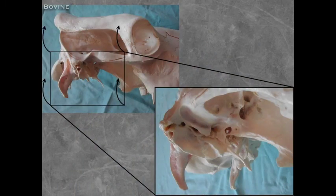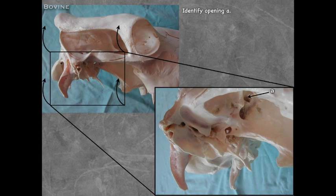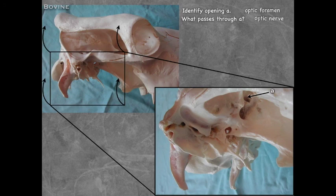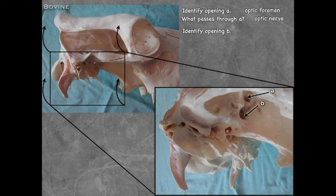Looking at the caudal aspect of the skull tilted to see the foramina: foramen A is the optic foramen, transmitting the optic nerve. The large foramen at B is a combination of the orbital fissure and the round foramen (foramen rotunda), making it the foramen orbitale rotunda.